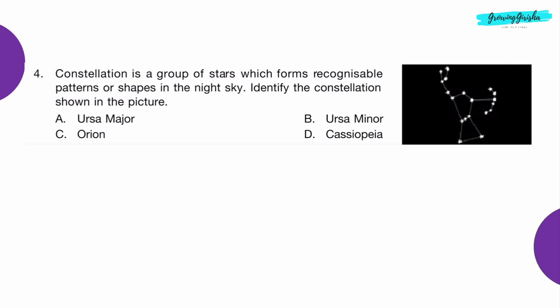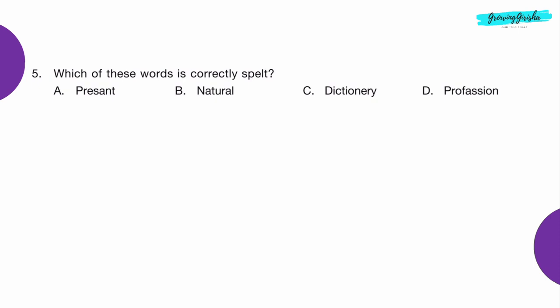Question 4: A constellation is a group of stars which form recognizable patterns or shapes in the night sky. Identify the constellation shown in the picture. Option C: Orion.